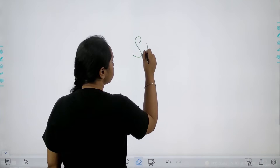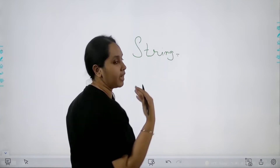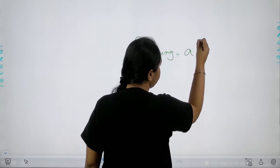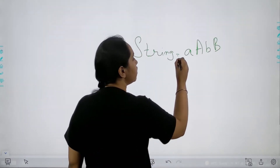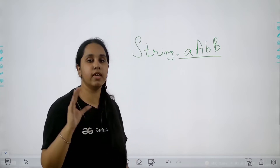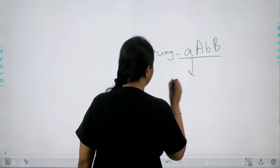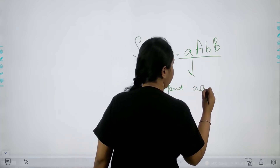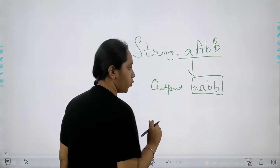Basically we would be given a string. The string can include some capital letters and some lowercase letters — for example: A, a, B, b. What I need to do is remove all the uppercase letters and only have lowercase letters in my string. So basically the output should be a, a, b, b. This should be the output.